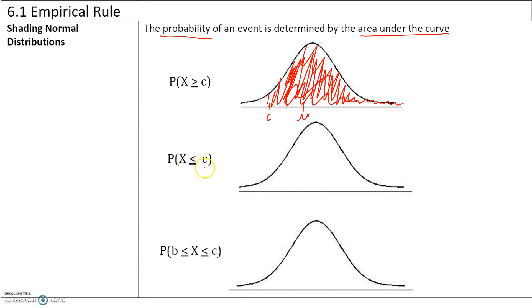The probability that x is less than or equal to c — where mu is the mean and c is your value — is the area under the curve to the left of c. We shade to the left because we want values less than or equal to c, compared to the first case where we shaded to the right for values greater than or equal to c.